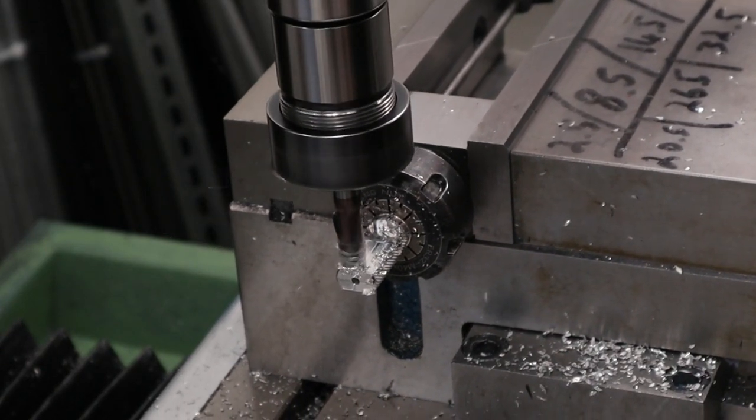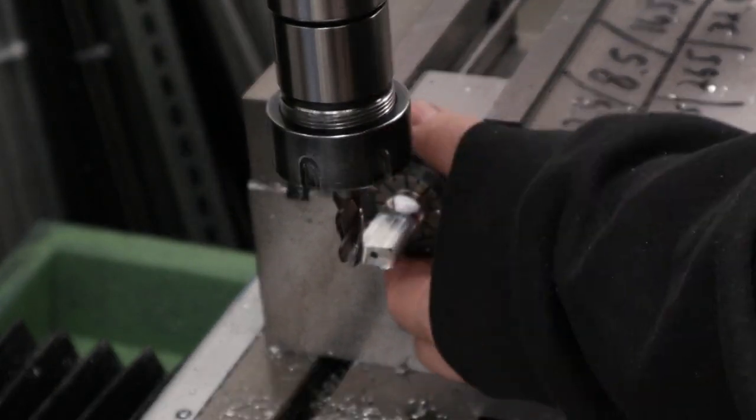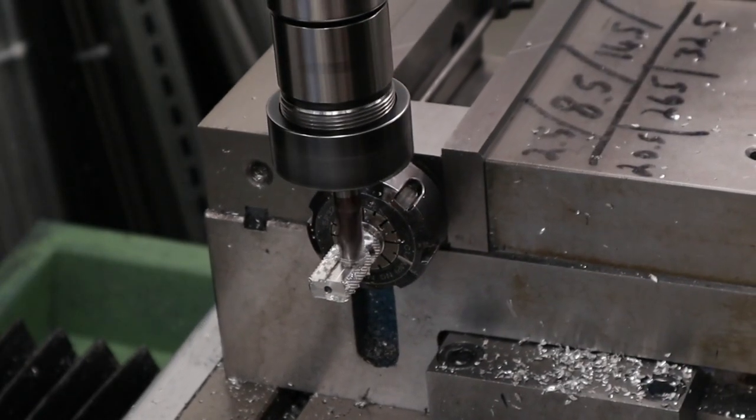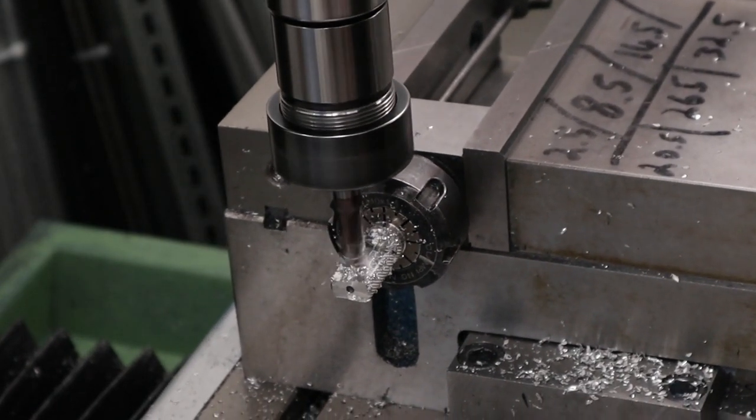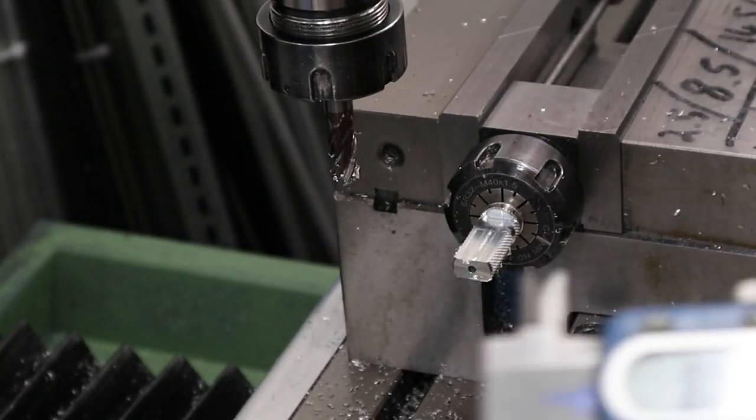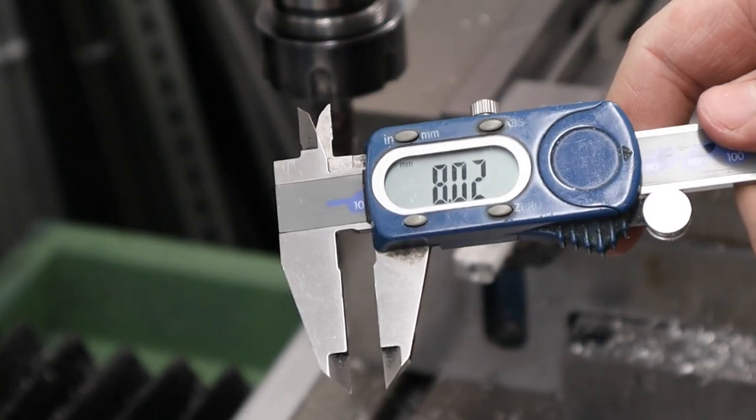With this done we can take our calipers, measure across the material and calculate how much material we have left to remove from each side. The goal is 8mm and as you can see from the calipers we hit 8.02mm which is slightly oversized but perfectly good for a trigger blade.